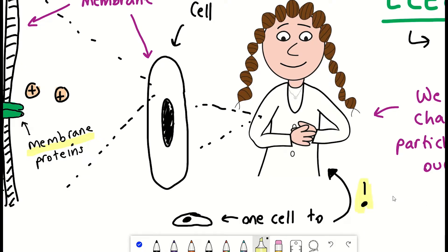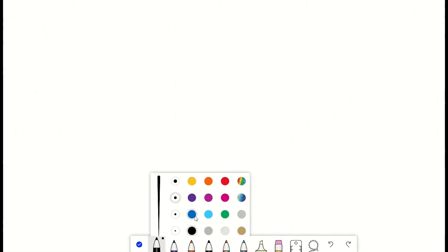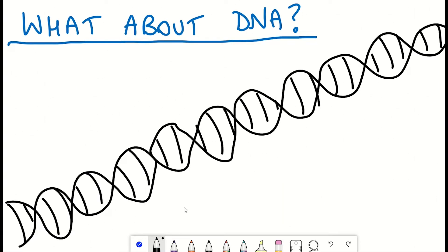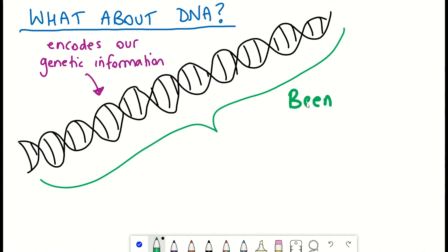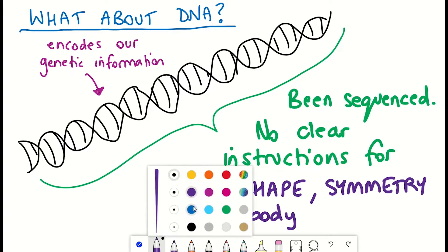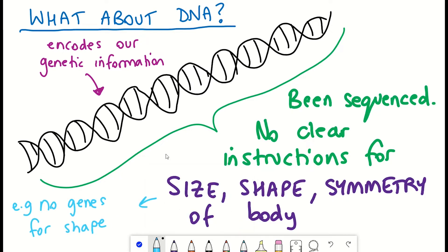Now you might be thinking, but the DNA has that information. Well, yes, DNA has a lot of information, but we've sequenced the genome and there's no direct instruction for how to control the size, the shape, the symmetry, and the structure of the body as it grows. So where does that information actually come from?